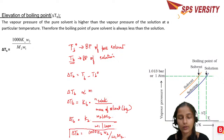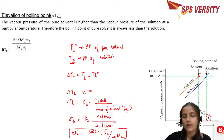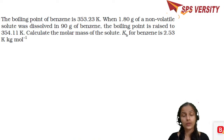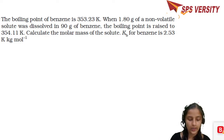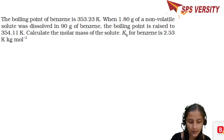On a graph, the pure solvent boils at Tb° (lower temperature, where vapor pressure equals atmospheric pressure), and the solution boils at the higher temperature Tb. The difference is delta Tb. For water as solvent, remember the boiling point is 373.15 K — this should be known even if not stated in the problem.